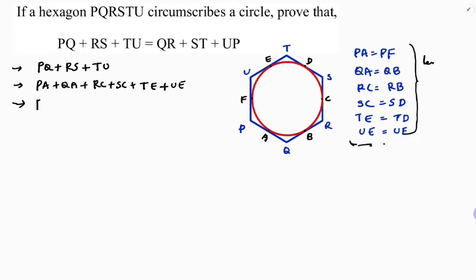So here, length of the tangents from external point are equal. So PA I will add as PF, QA I will add as QB, RC I will add as RB, SC I will add as SD, TE as TD, because all are equal to tangent from external point. UE I will add as UF.